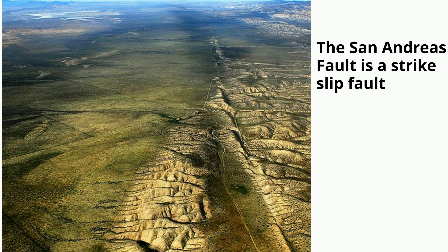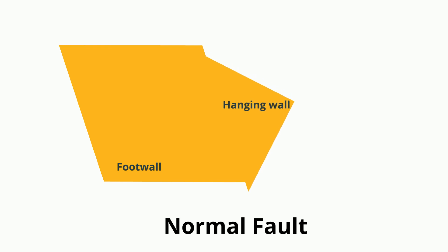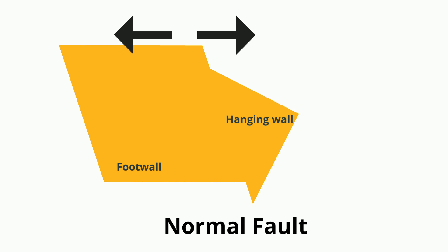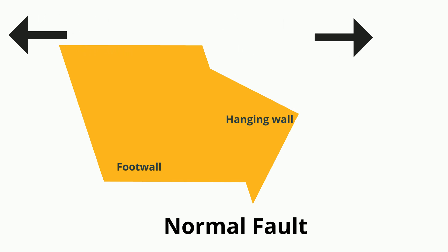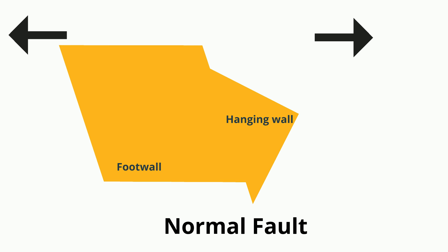During a normal fault, the hanging wall moves down relative to the foot wall. These faults are called normal because this is what you would normally expect the faults to do. Normal faults are a result of tension, which stresses or pulls the rock apart. Normal faults are common along divergent boundaries — the Basin Range area is an example of this.